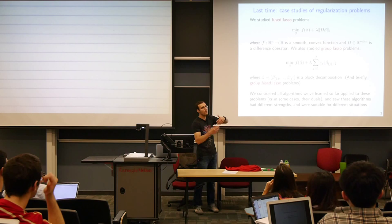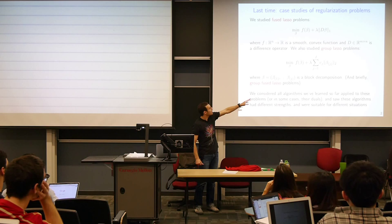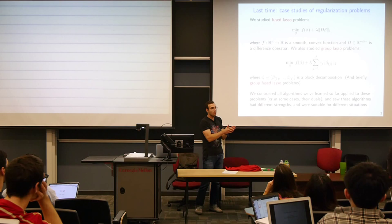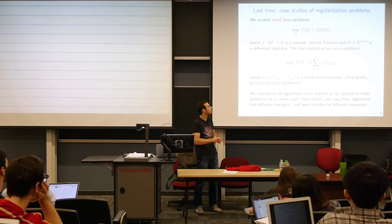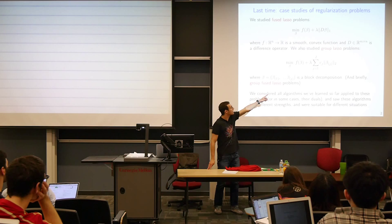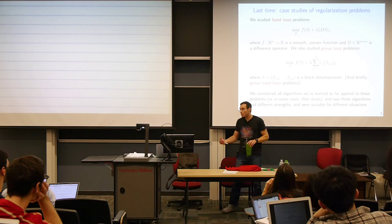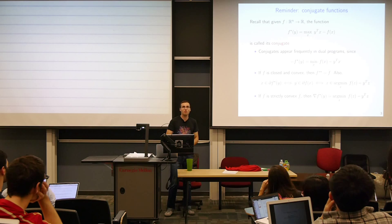Group lasso problems were a different class of problems. They fit into a general sum-of-norms framework: it's also a linear operator times beta, but we take the 2-norm rather than the 1-norm, and there's a bunch of linear operators times beta that we sum up. Each linear operator just pulls out a particular sub-block of beta. Unlike the fused lasso, which tries to give us a piecewise constant vector, this one is trying to give us a block-sparse vector — a solution where blocks of beta, defined by certain index sets, are either 0 or non-zero altogether. So it's a generalization of the lasso to groups.